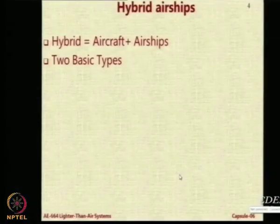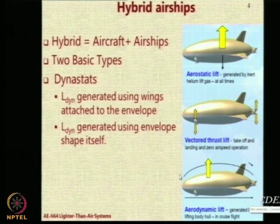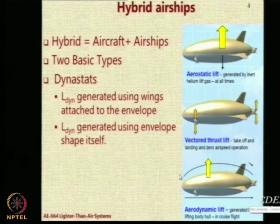There are two basic types of hybrid airships. The first are called dynastats, which generally generate dynamic lift using either wings attached to the envelope or by shaping the envelope itself like a lifting body. A conventional airship envelope is also a lifting body, but not a very good one. By shaping the envelope appropriately, you can make it a much better lifting body and hence get more dynamic lift.